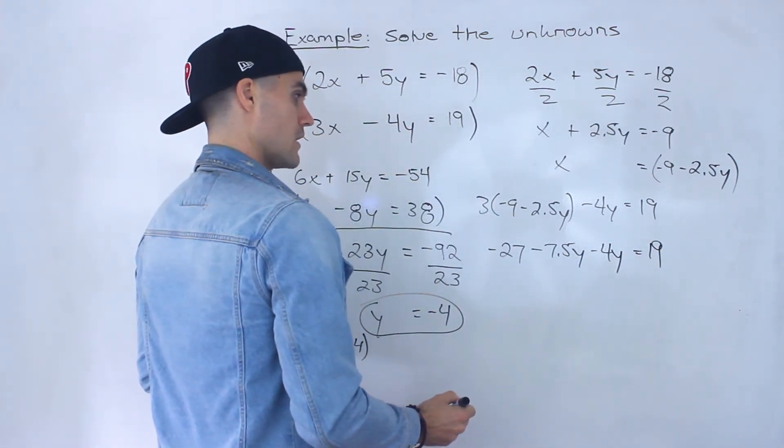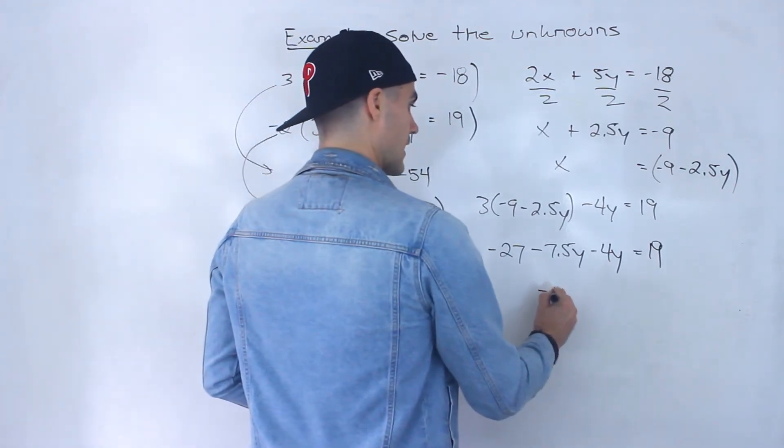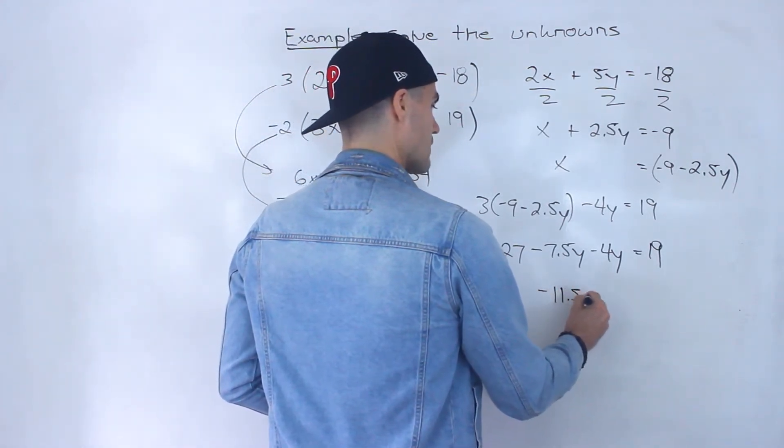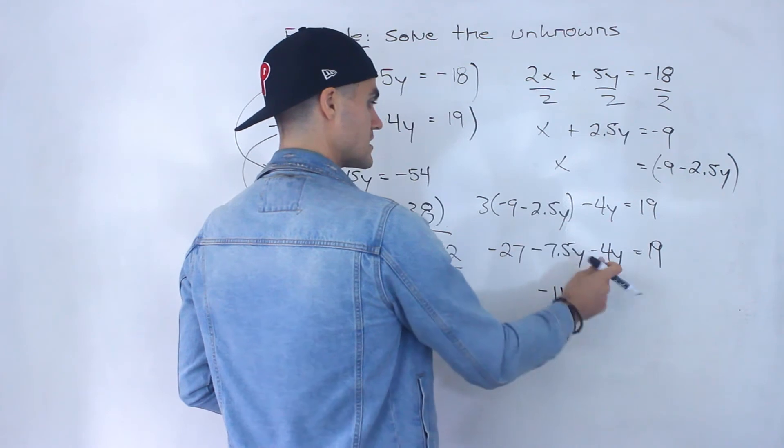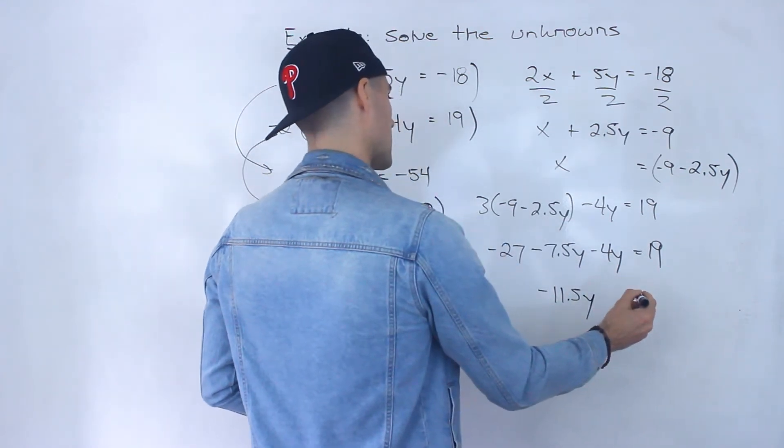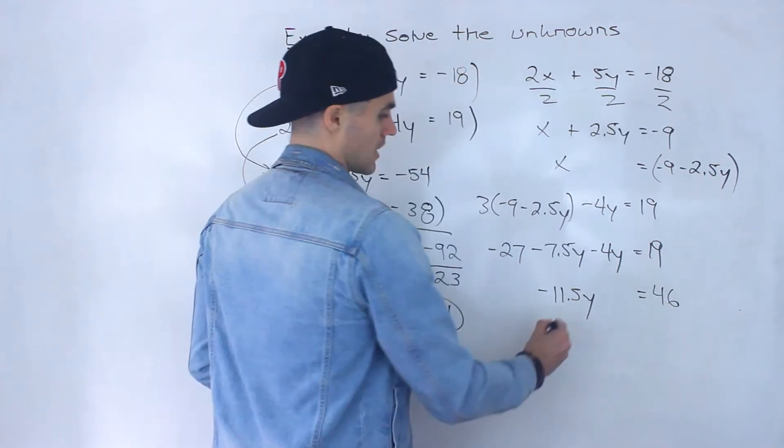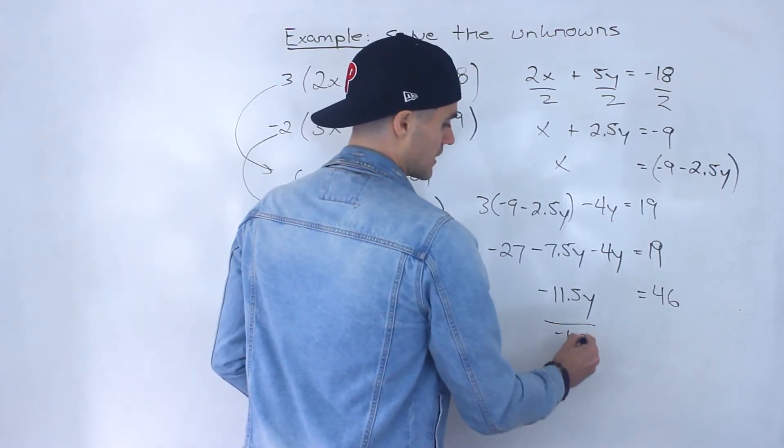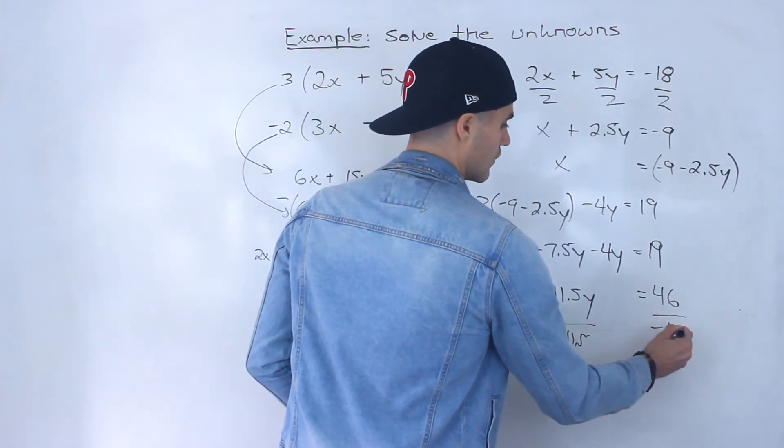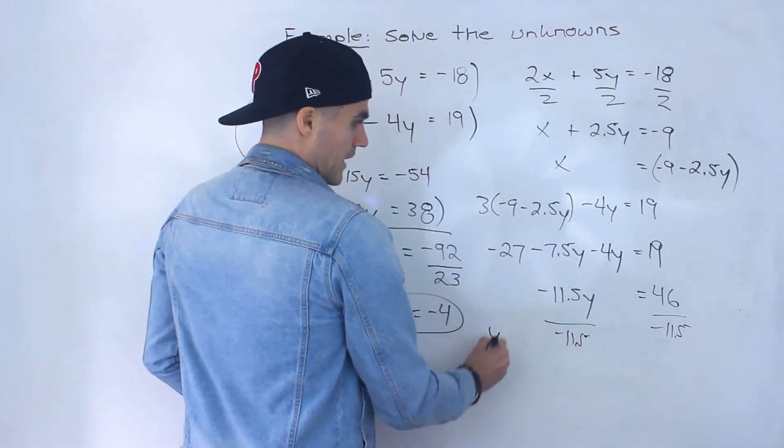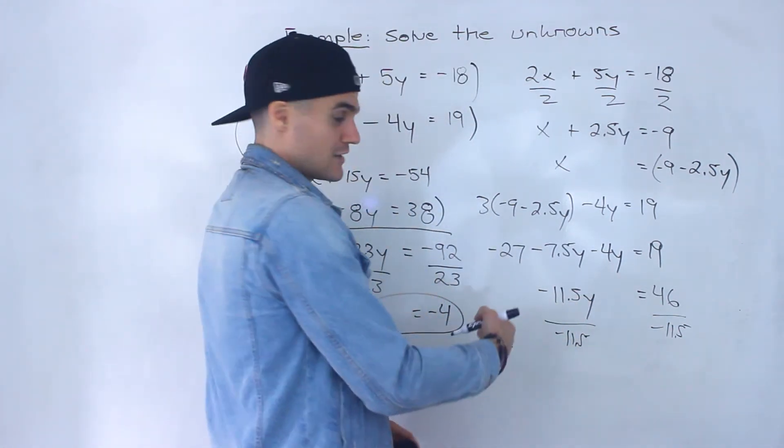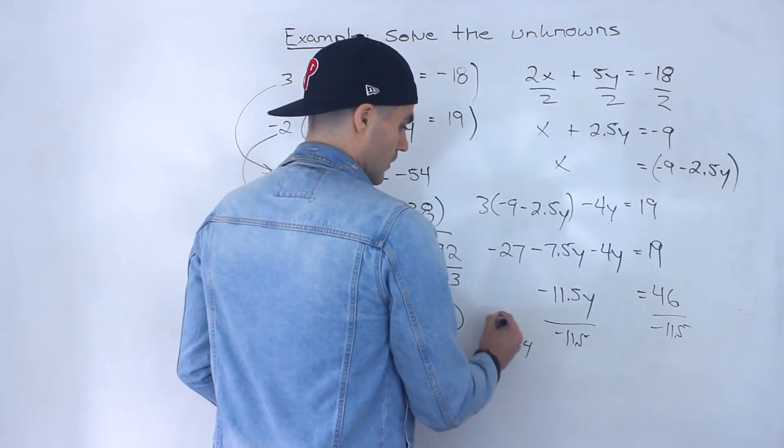Right so what would we end up with here we would end up with negative 11.5y and then this here would end up being 46 and then we can divide both sides by negative 11.5, the y would be by itself. 46 divided by negative 11.5 would give us negative 4.